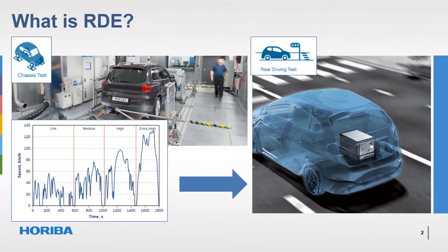RDE arose as a result of work performed by the EU Joint Research Centre (JRC) in 2010, which showed that passenger cars emitted far more pollutants on the road than they did in the laboratory test. Historically, all exhaust emissions testing has been performed in a chassis dynamometer laboratory using standard driving cycles such as the Worldwide Harmonised Light Vehicles Test Cycles (WLTC). This provides reproducible and repeatable conditions so that the vehicle's emissions and fuel economy can be compared. However, this did not reflect real-world emissions and fuel economy, as was confirmed by the JRC's programme.